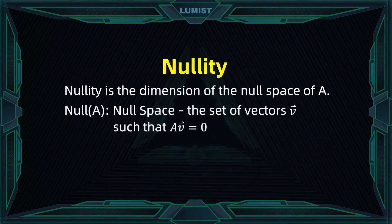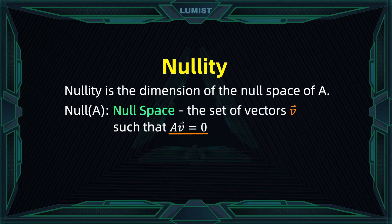Now that we are familiar with row and column space, there is an important subspace related to a matrix, and this is something we have seen briefly in earlier videos: the null space. The null space for a matrix A, as you hopefully remember, is the subspace spanned by the set of vectors V that satisfy the equation A times V equal to 0.